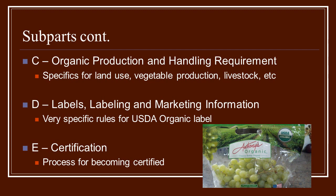Those rules are what the inspector will be looking at when they come out to make sure you're following them. Under subpart D, you have labels, labeling, and marketing information. There are very specific rules on how you can use the organic label, where you can use it — a lot more information than you would think. This is all broken down exactly how they want you to use that USDA organic label.